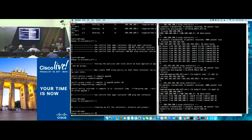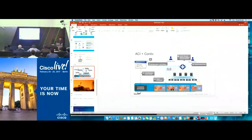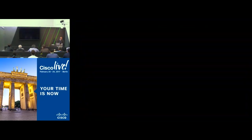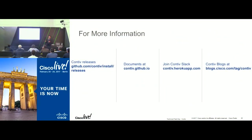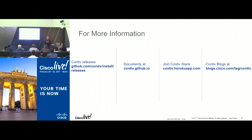In summary, Contiv is a policy framework and container networking implementation for different backends. It's an open source project started by Cisco, available with Docker and Kubernetes, providing a policy model applied against different backends. With ACI, you get additional advantages. If you or your network team is thinking about ACI and containers, you should pay attention to Contiv and how it enables both IT admins and developers to work together and achieve true connectivity and policy from a security point of view in production.